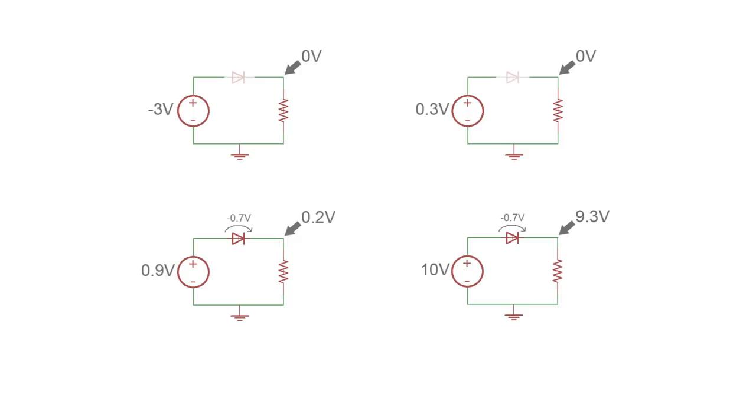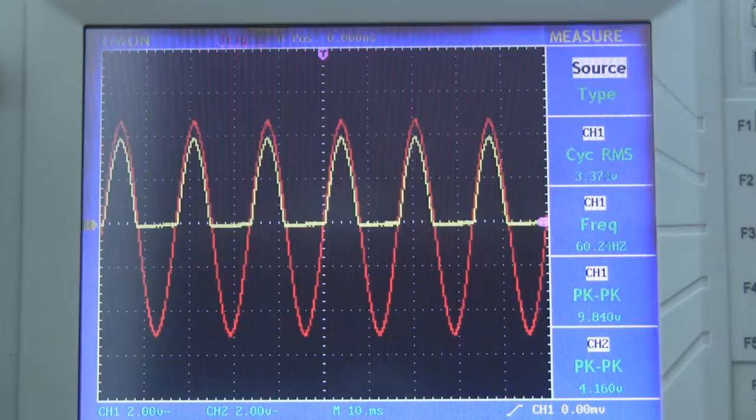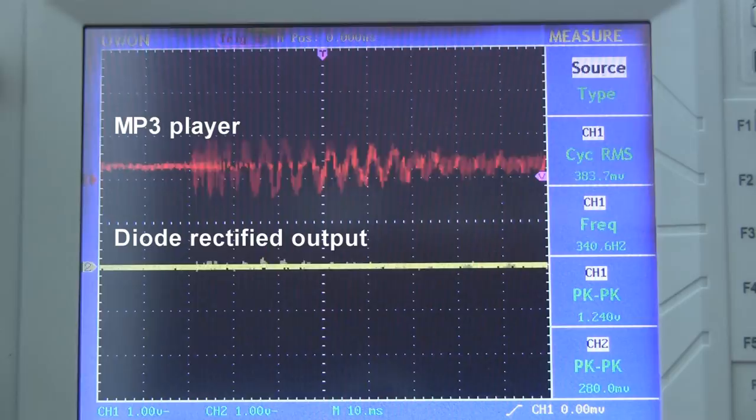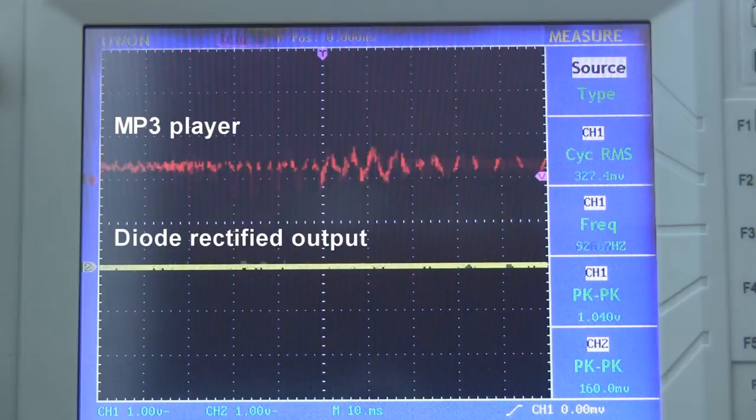Now, sometimes that forward voltage is a problem, sometimes it's not. For the example I was showing you here with the 10 volts peak-to-peak on the input, it was almost unnoticeable. But if I was trying to rectify half a volt AC, like the signal coming out of my MP3 player, that 0.7 volt drop becomes really annoying, and it doesn't really work. You'll have to use advanced techniques like superdiodes to deal with it, but you don't need to worry about that for now.